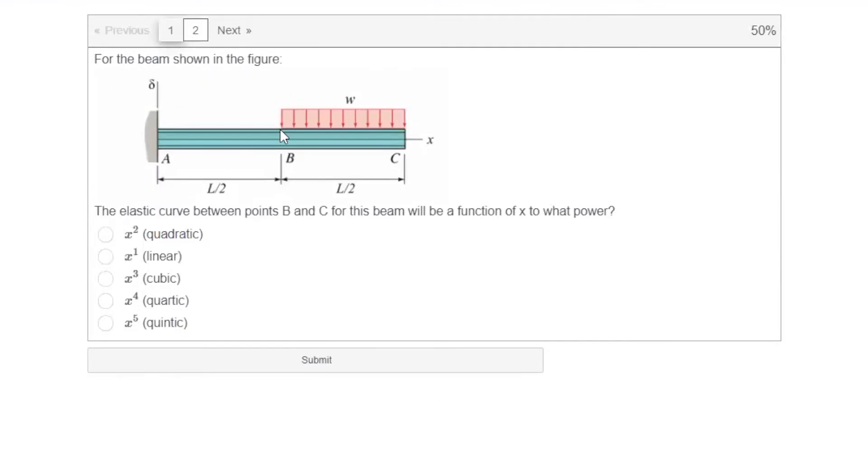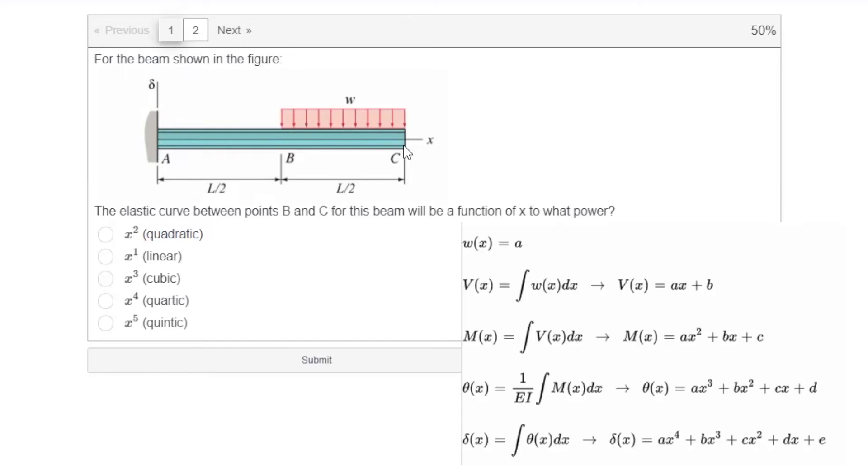In this case, we want to determine how much would be the power of x in the elastic curve equation. The loading has the power of zero because that is a constant. So shear would be one degree up. That would be one. Moment would be two. Slope would be three. And deformation would be four. If we want to determine a slope, that would be three. If we want to determine elastic curve or deformation, that would be four.